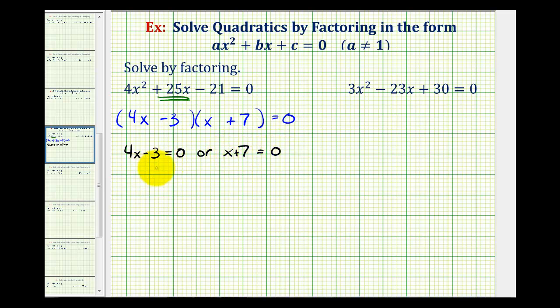And now we'll solve these two equations for x to determine our solutions. So here we would add 3 to both sides. So we have 4x equals 3, divide both sides by 4. We have x equals positive 3 fourths.